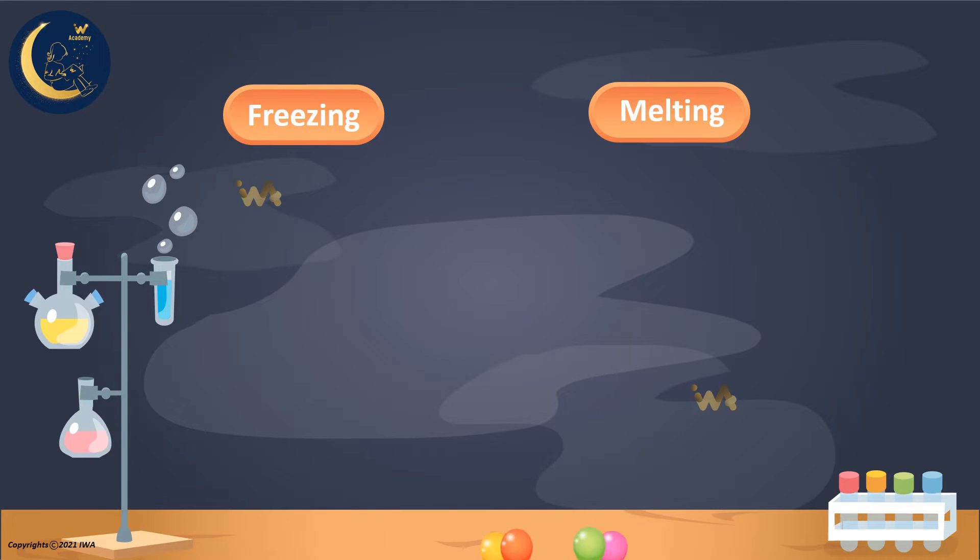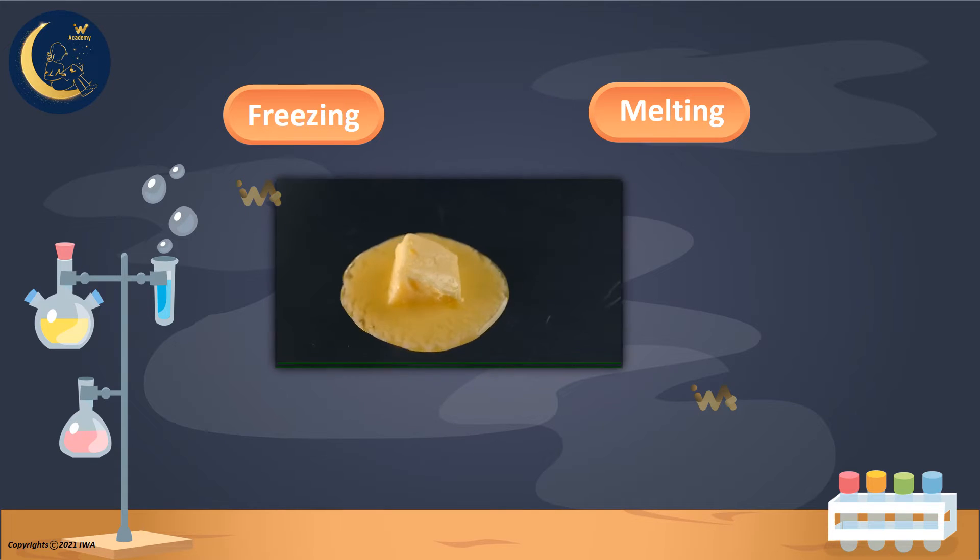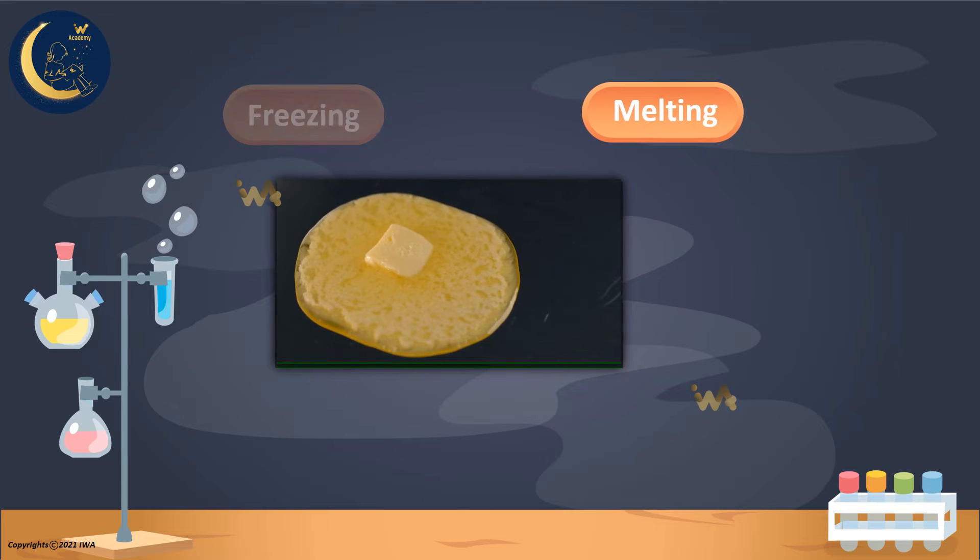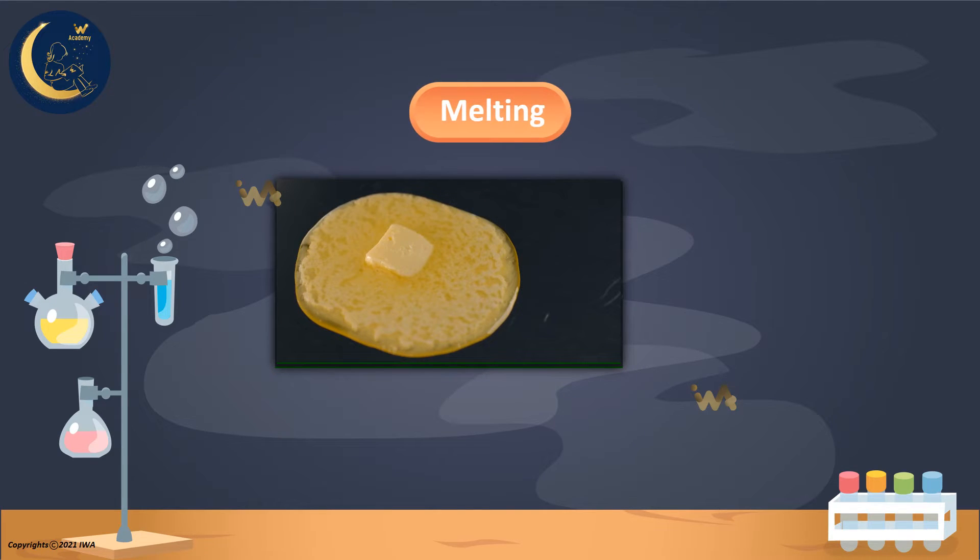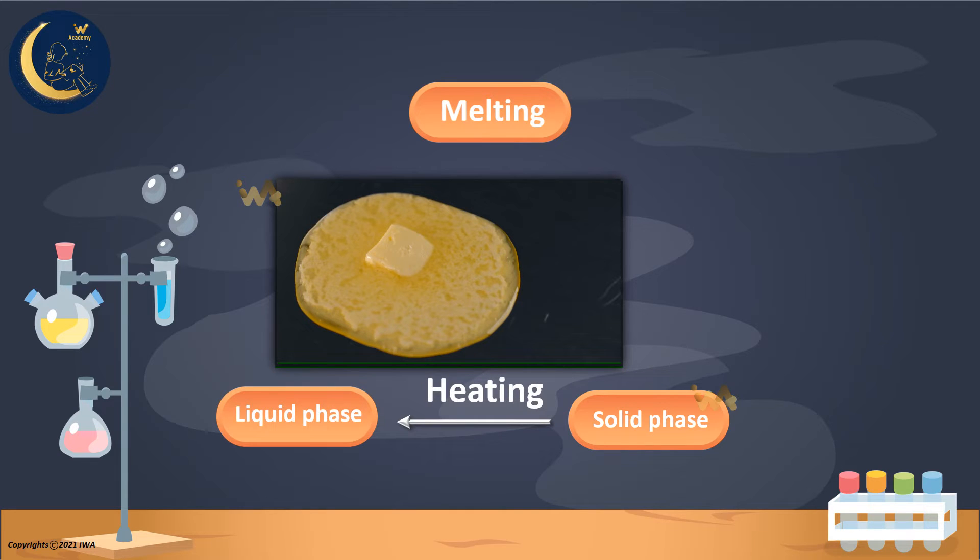And now, I need your help to determine the transformation of different kinds of matter. When we place butter on the stove, what do we call this transformation? Great! It is melting. The butter was a solid, and when it was heated up, it became a liquid. Great work!